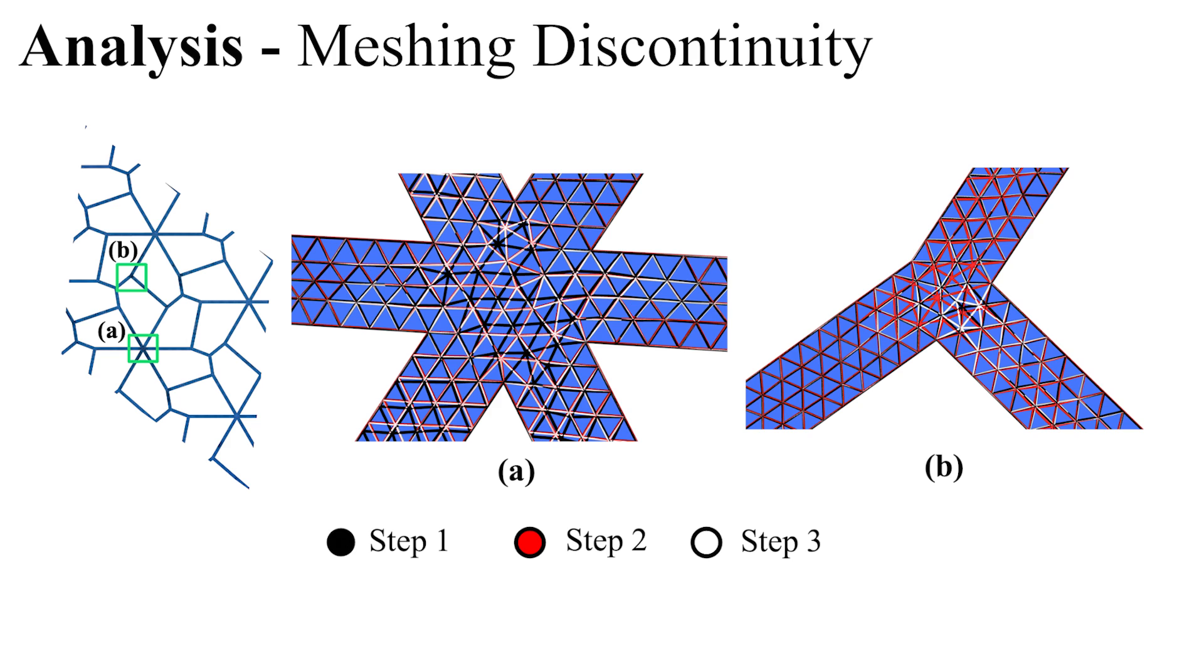To identify the source of this non-smoothness, we overlay the simulation rest state meshes for three consecutive steps in parameter space using a relatively small step size. The close-up views shown here reveal that the change in discretization is rather significant compared to the small magnitude of parameter perturbations.